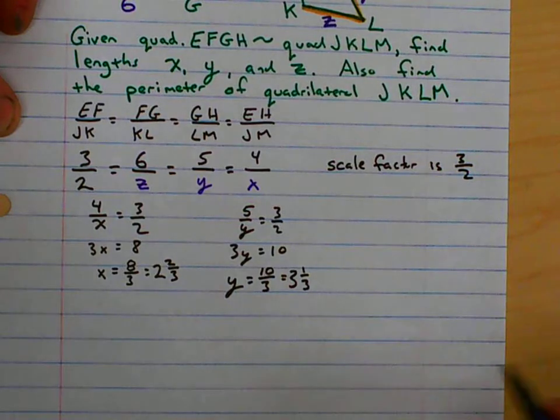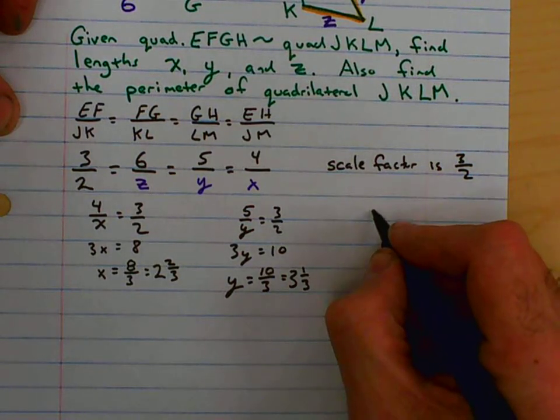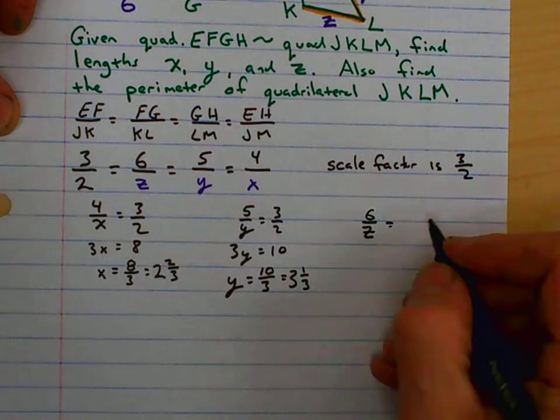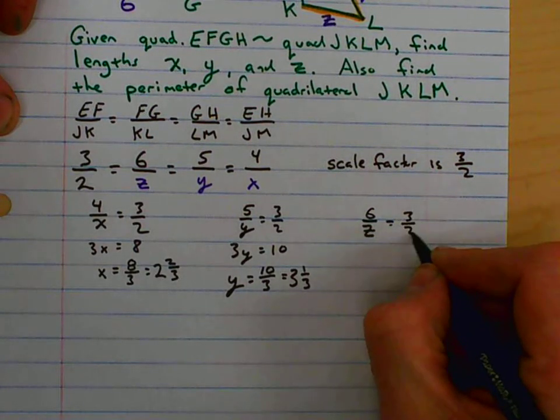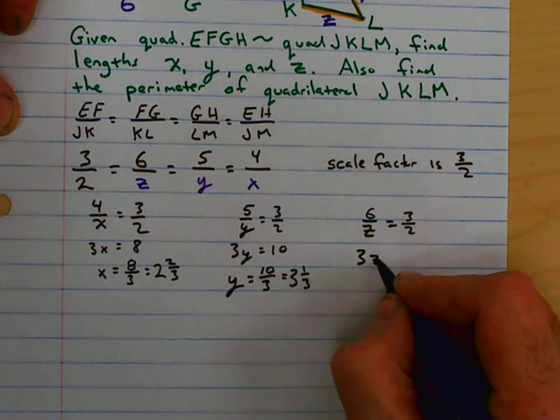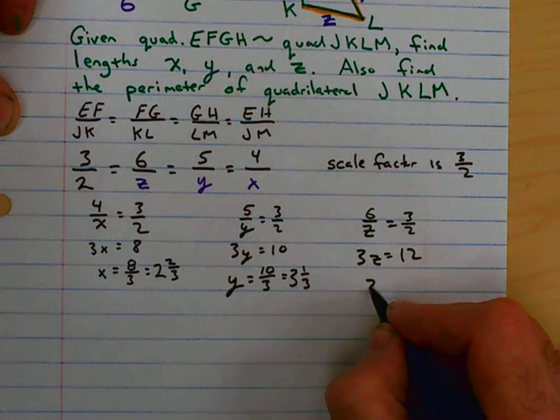And then finding z, we have 6 over z, is one of our fractions. And we're going to set that equal to 3 over 2. So we only have one unknown. We cross multiply. We get 3z equals 12. So z must be 4.